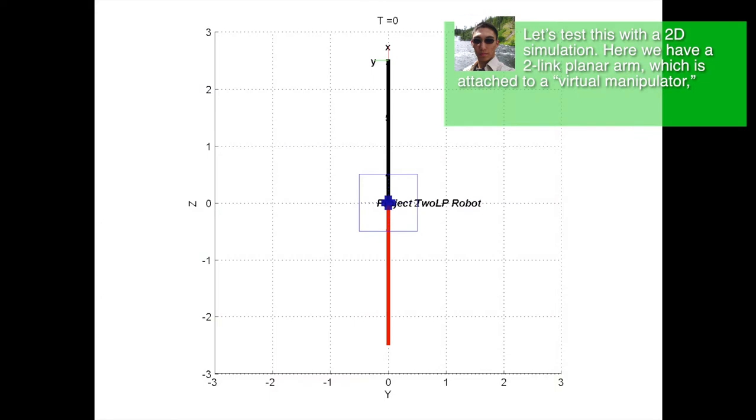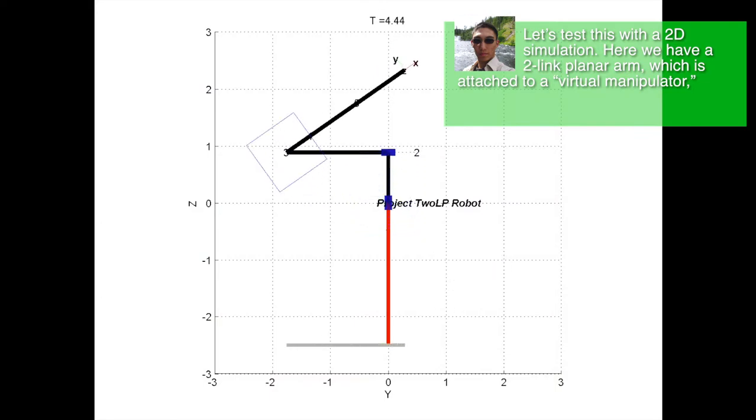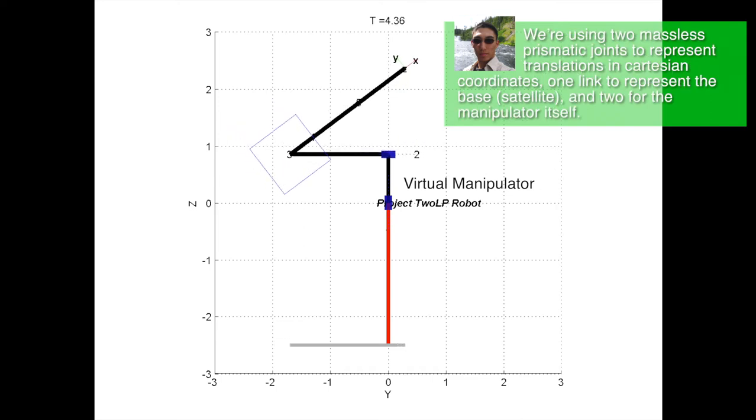Let's test this with a 2D simulation. Here we have a two-linked planar arm, which is attached to a virtual manipulator—a set of extra links in series with our manipulator, which help keep track of translational and rotational shifts over the course of the simulation. We're using two massless prismatic joints to represent translations in Cartesian coordinates, one link to represent the base, and two for the manipulator itself.